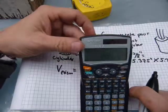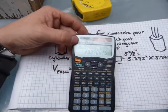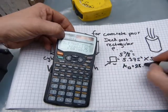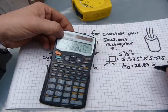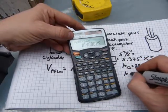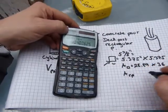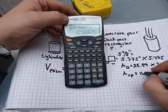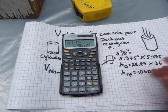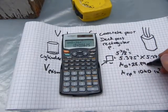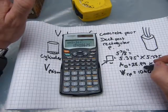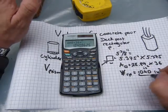The area of the base is 5.375 × 5.375 = 28.89 square inches. We multiply that by the height, which was 36 inches — that's 3 feet. So the volume of the rectangular prism is 28.89 × 36 = 1,040 cubic inches. Everything is in inches: the area of the base is square inches and the volume is cubic inches — 1,040 cubic inches.